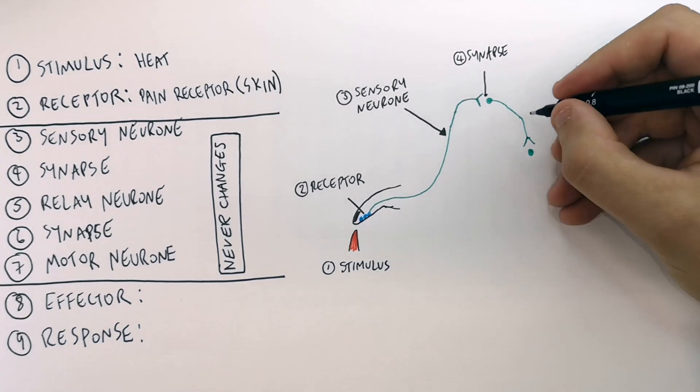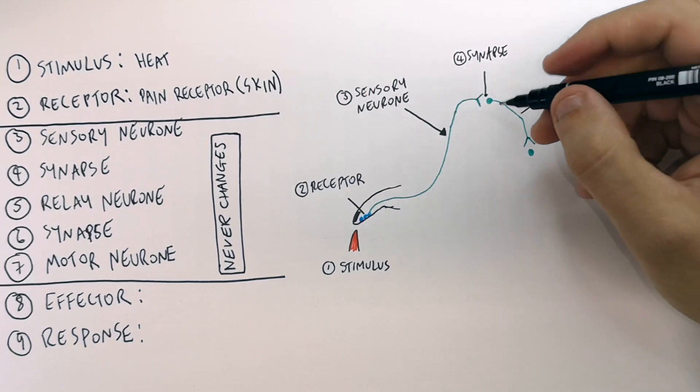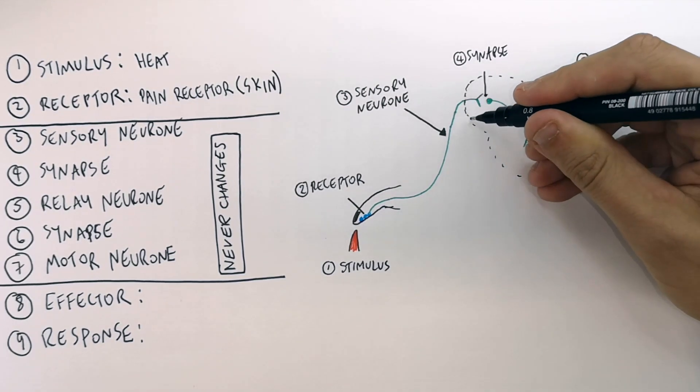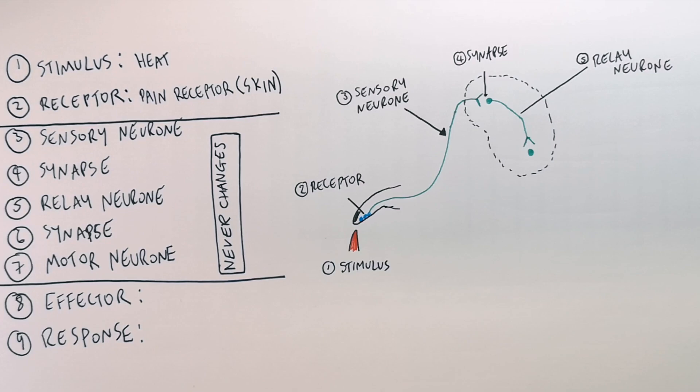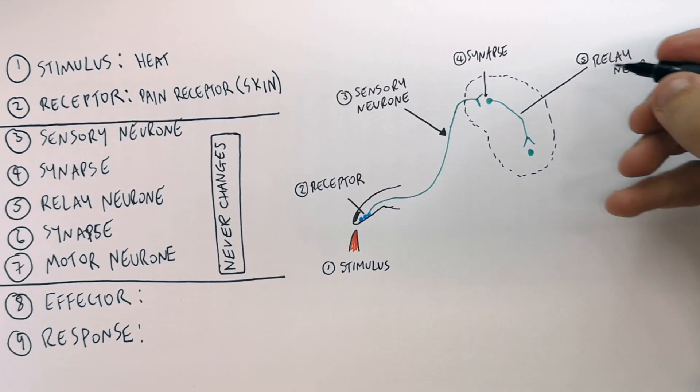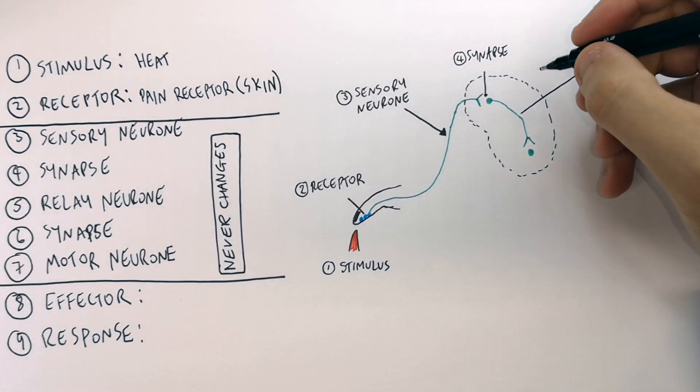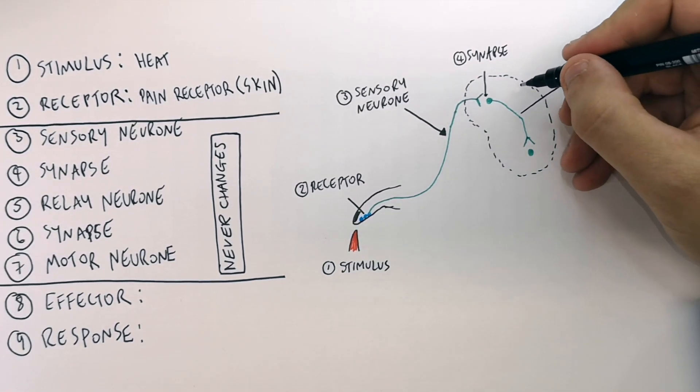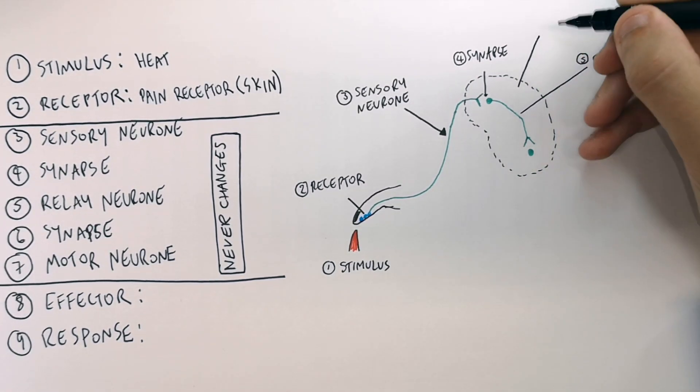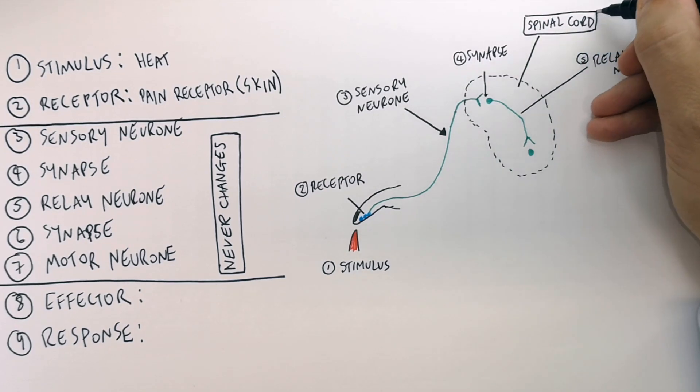And in this case here, it is the relay neuron. That's the second neuron in the reflex arc. And you find the relay neuron, which is the second neuron in the reflex arc, in the central nervous system. So that is in the brain and in the spinal cord, which is what I'm drawing now, the spinal cord.